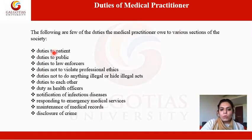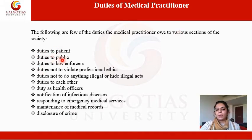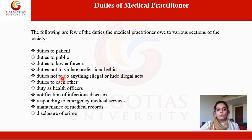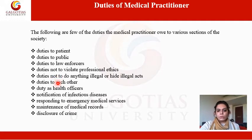First is duties to patient — we are answerable and liable to patients. Then duties to the public, duties to law enforcers, duties not to violate any professional ethics or any code of ethics which has been set by the association or the governing body, duties not to do anything illegal or hide illegal acts, and duties to each other — meaning your colleagues, your subordinates, your seniors, your superiors — which comes under the colleague impairment act.